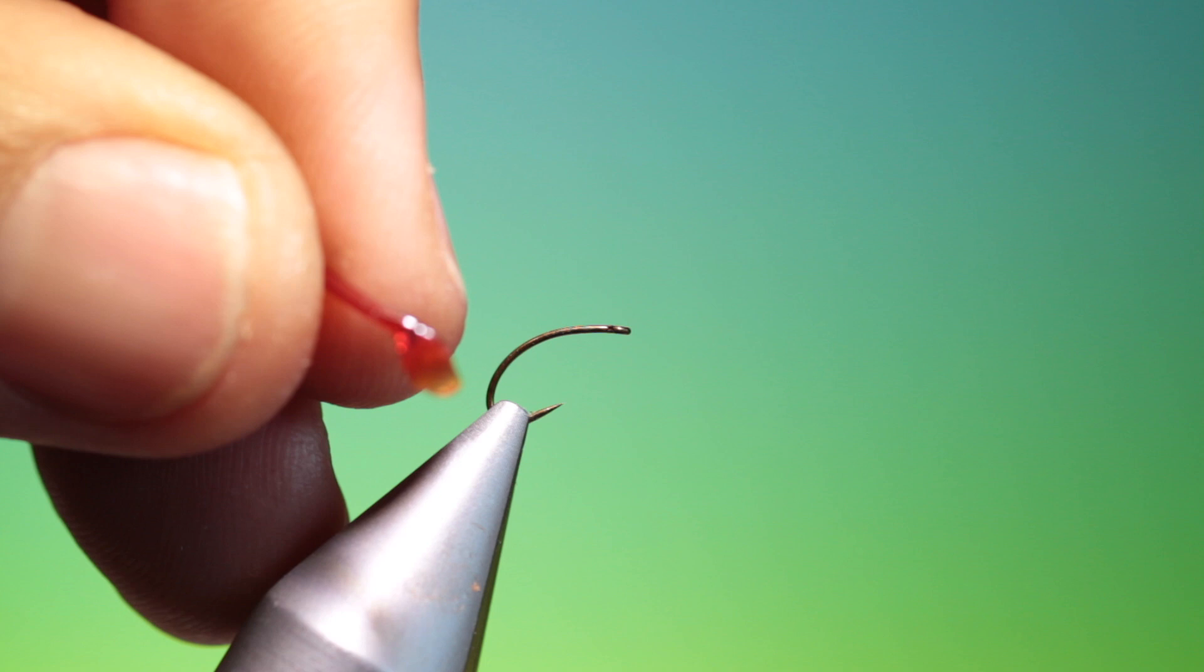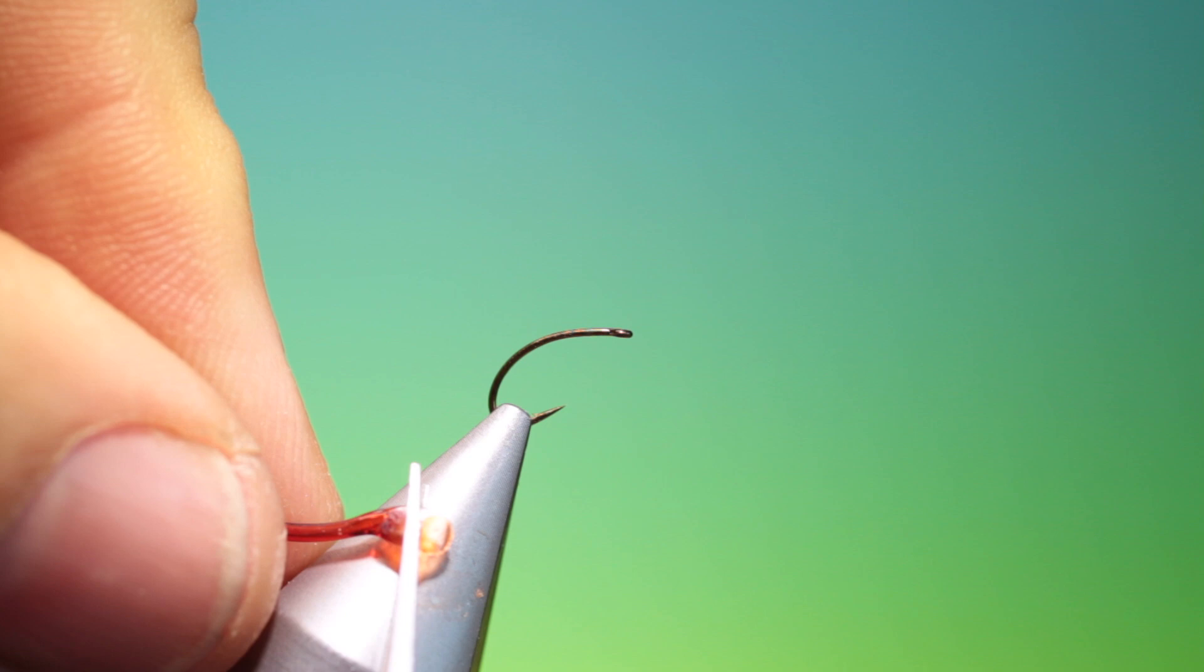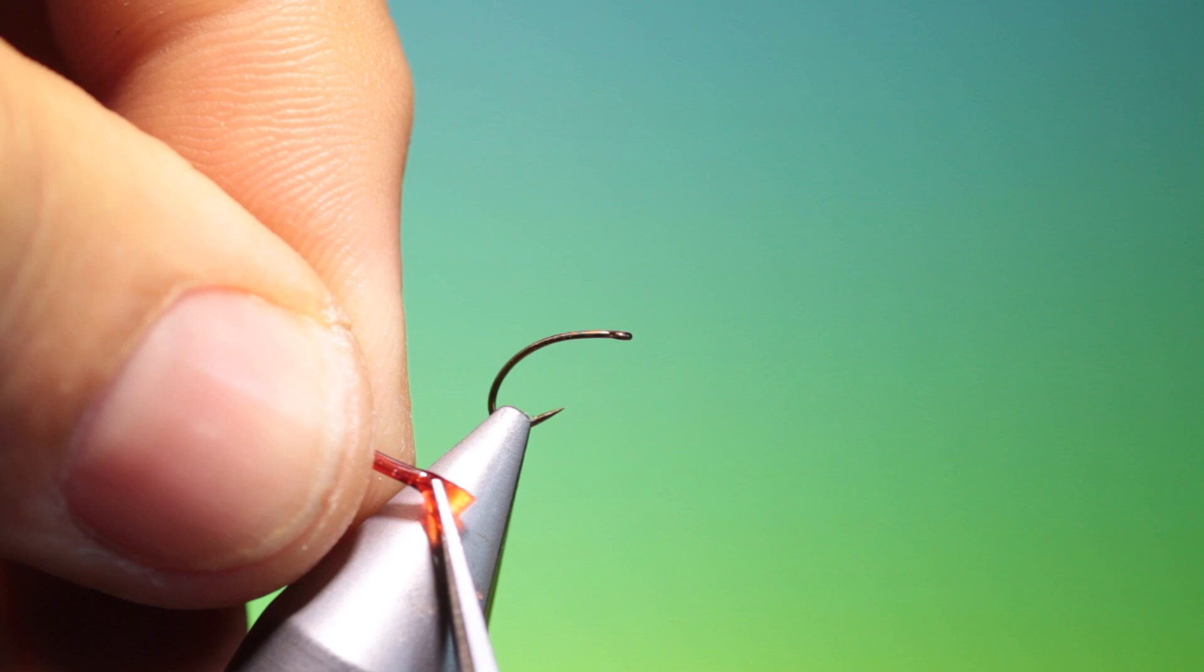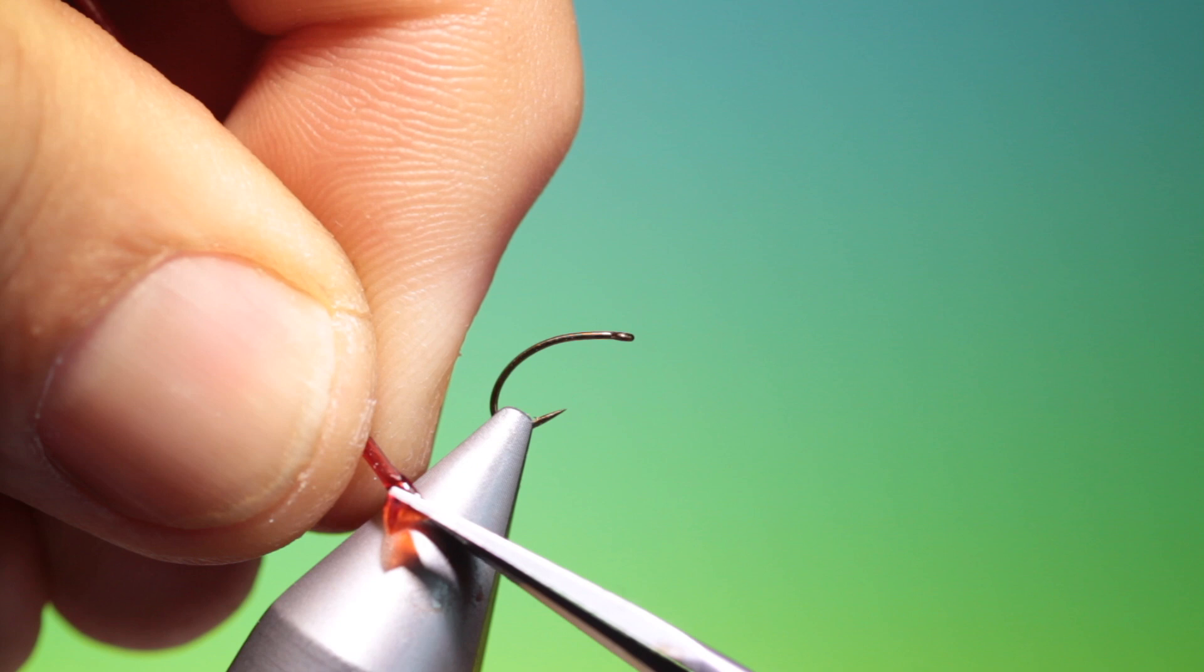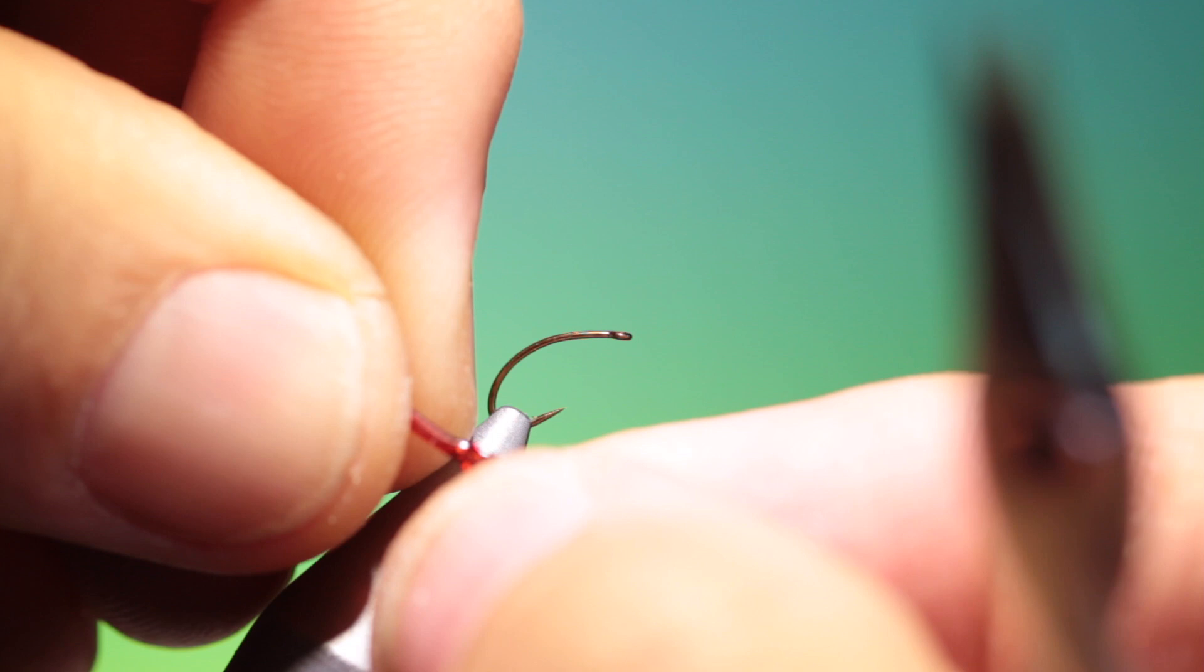So then we take our scissors, we can trim that off and we make a little V cut in the tail, pull out the centre just like that.